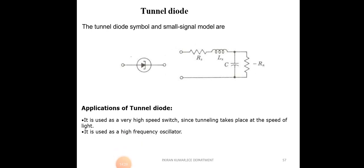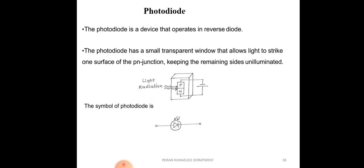The symbol of the tunnel diode is shown here. In the small signal model, the tunnel diode can be replaced with a resistor, inductor, and capacitor. Applications of the tunnel diode: it is used as a very high speed switch since tunneling takes place at the speed of light, and it is also used as a high frequency oscillator.